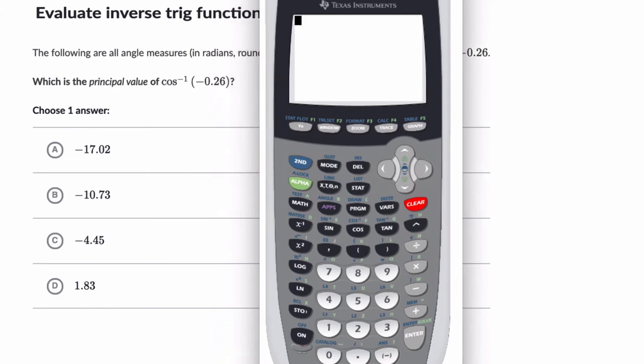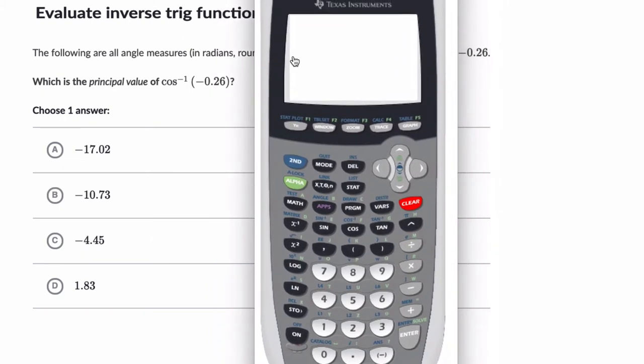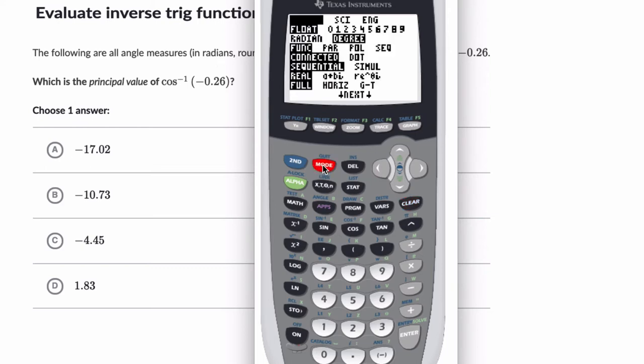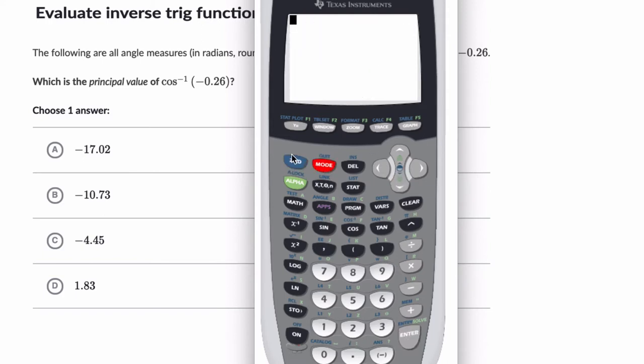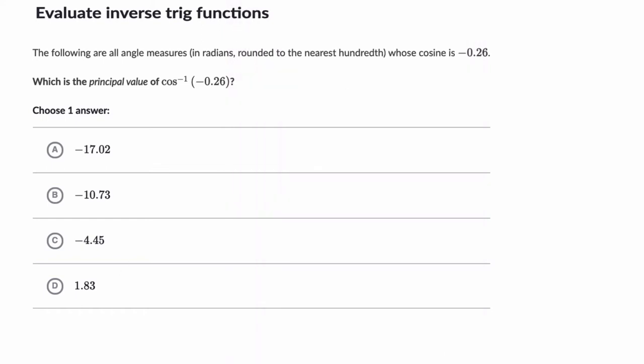This set of questions is fairly routine. What you need to do is pay attention to whether you're in radians or degrees. Press mode here. I'm in degree right now, but I want to be in radians. Scroll down, hit enter, quit out. Then I just hit second cosine. You can see the little inverse cosine icon there. And then I put in whatever I have. In this case, it's negative 0.26. It's in radians. I hit enter, and I get 1.83. And that is this choice right here. So it's choice D.